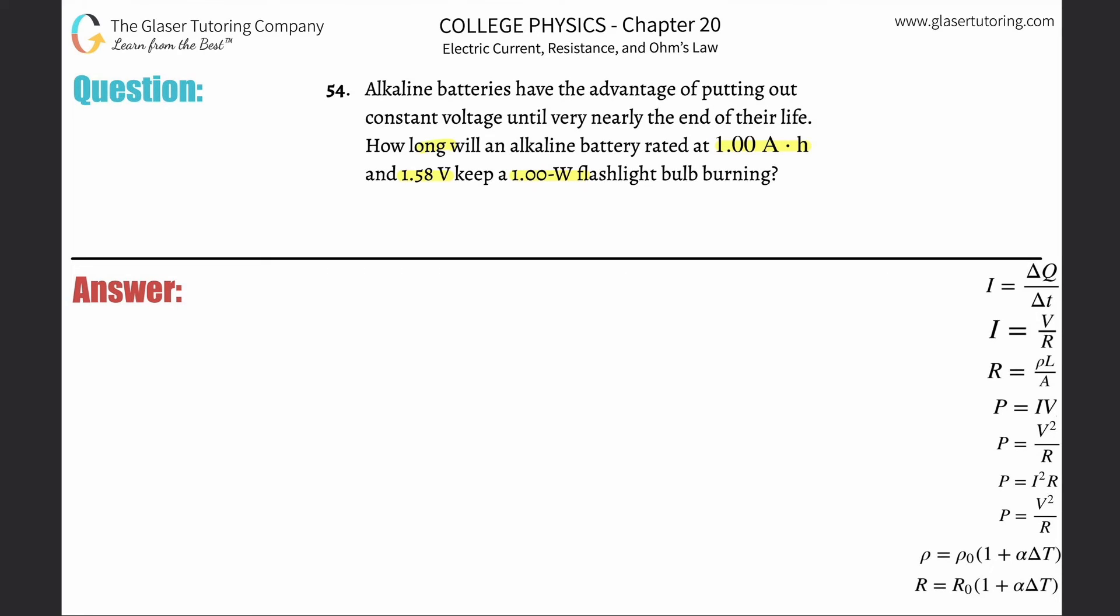So first of all what does this even mean, 1 amp hour? Well that basically means that this particular battery has the ability to produce one full amp of current for one hour. That's what it means.